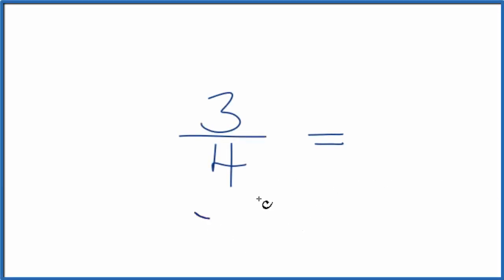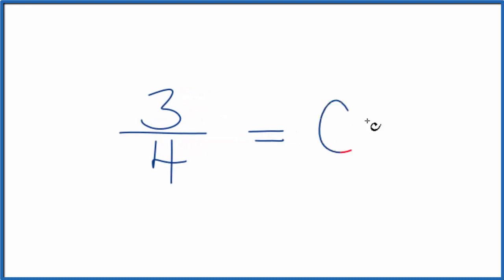If you're asked to write the fraction 3 fourths as a decimal, here's how you do it. First off, 3 is smaller than 4, so 3 divided by 4, that's going to be less than 1. So we'll have zero point something here.